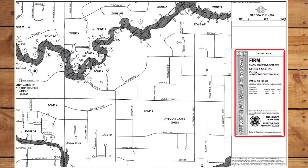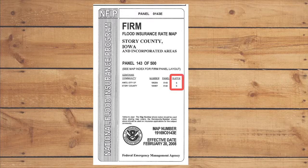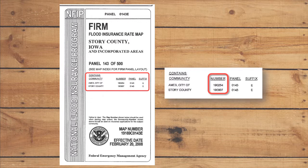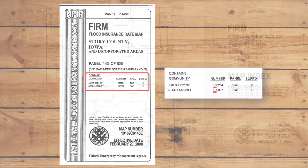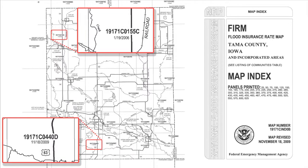Every map index and panel has a title box. The title box contains the community name, number, panel number or page number, map panel suffix if any, and the effective date or revision date of the map. The community number is a unique six-digit number given to each community. All Iowa community numbers begin with 19. As revisions to maps and panels occur, FEMA will republish only the map index and those map panels that have been revised. For this reason, it is not unusual for a community's FIRM panels to have different effective dates. The map revision date will be shown in the title box.